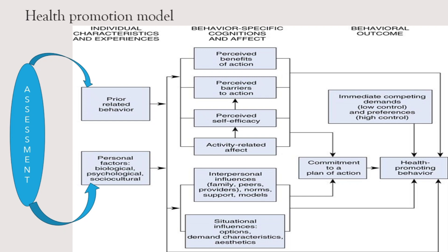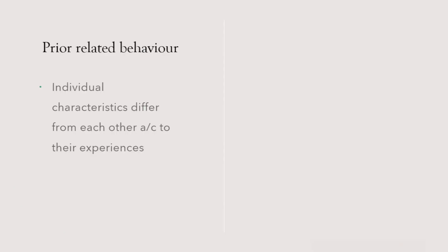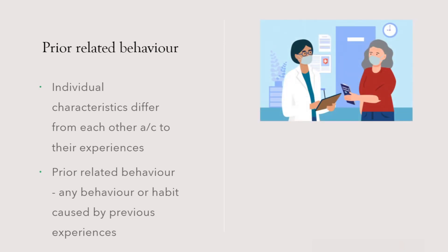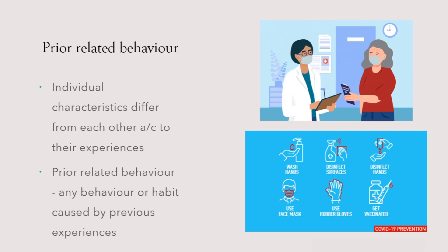Prior related behavior means any behavior or habit caused by previous experiences. For example, while assessing a person, we may see she has already suffered from COVID. Then she becomes more careful — she may develop habits like always wearing masks in public places and being extra careful about coughs and colds. These are her prior related behaviors, which are now part of her individual characteristics resulting from her experiences.